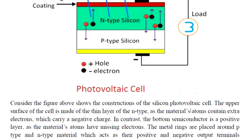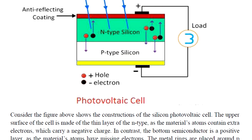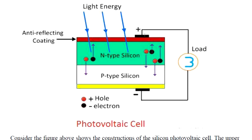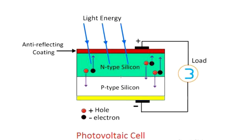Consider the construction of the silicon photovoltaic cell. The upper surface is made of a thin layer of N-type material, which has extra electrons. The P-type material has holes. Metal rings are placed around the P-type and N-type materials, serving as positive and negative output terminals respectively. The output voltage and current are obtained from a single cell, but the output of a single cell is very small, so different combinations of cells are used for increasing the output. The PV cell is used as a solar cell.